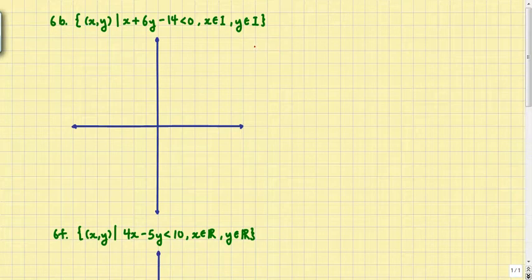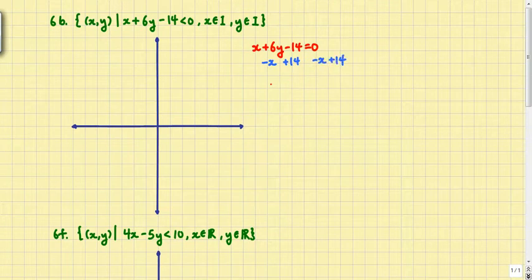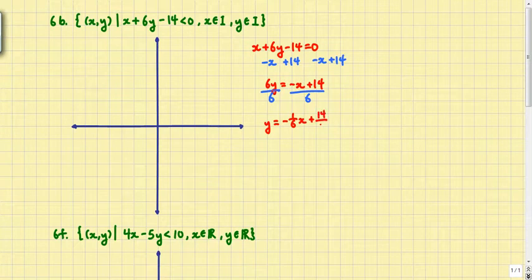So it says here we're looking for the set of xy such that x plus 6y minus 14 is less than 0, x and y must be integers. Usually what you want to do is start with the associated equation. We're going to change this into slope intercept form. So we'll subtract x and add 14 on either side. 6y equals negative x plus 14. Then divide both sides by 6. So y is equal to negative 1 over 6x plus 14 over 6.